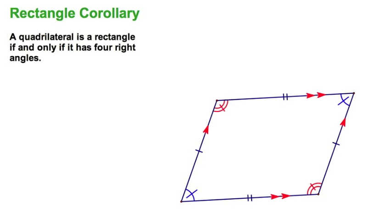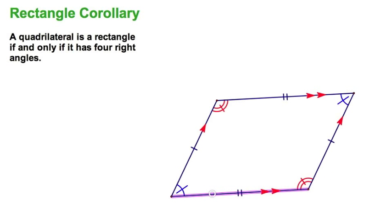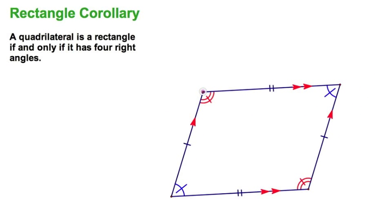Well, let's explore the rectangle corollary, again, starting with our good friend the parallelogram. Lots of tick marks here. Opposite sides congruent. Opposite sides parallel. Opposite angles congruent. Now, all we have to do right here. Remember, this is any old parallelogram.